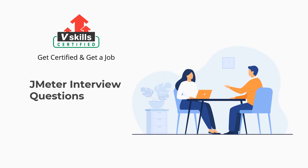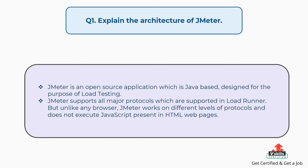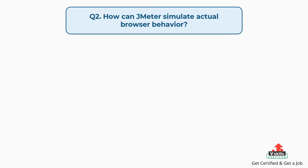Welcome to this JMeter interview questions. Question 1: Explain the architecture of JMeter. JMeter is an open source, Java-based application designed for load testing. JMeter supports all major protocols supported in LoadRunner, but unlike any browser, JMeter works on different levels of protocols and does not execute JavaScript present in HTML web pages.